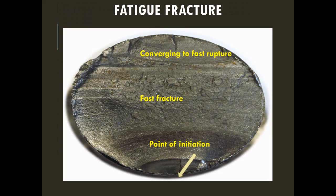This is the fracture surface of a fatigue fracture. You can see the point of initiation, which has a small crack of length about 2 to 3 mm. From there it starts propagating. You can see the beach marks — they radiate from the initiation site and then converge into a fast fracture zone.